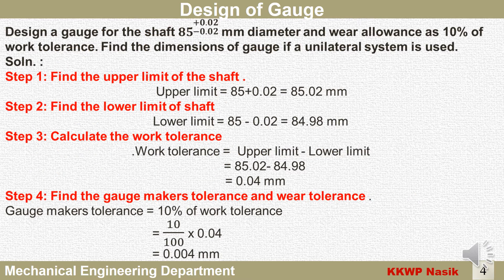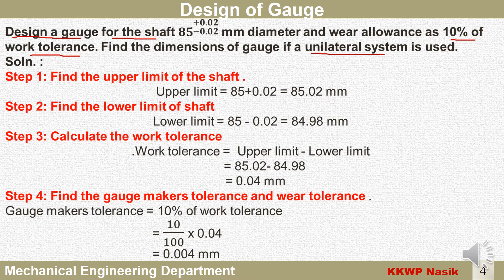Now let us see the problem on design of gauge. The problem is: design a gauge for a shaft of dimension 85 ± 0.02 mm diameter, with wear allowance as 10 percent of work tolerance. Find the dimensions of the gauge if a unilateral system is used.